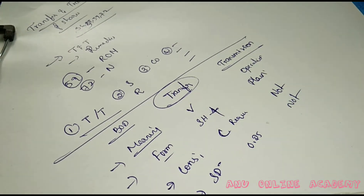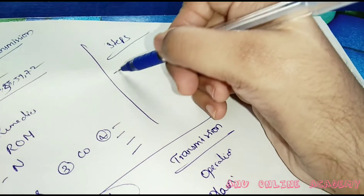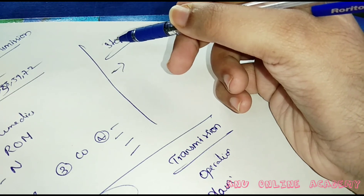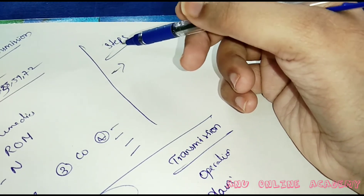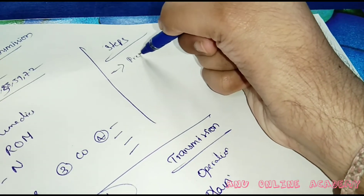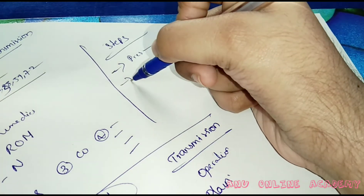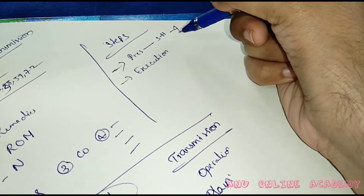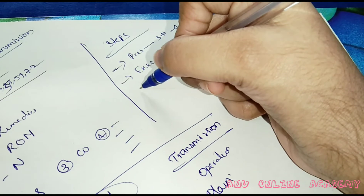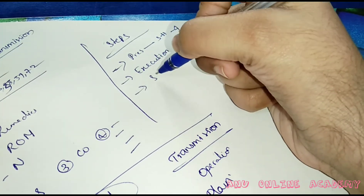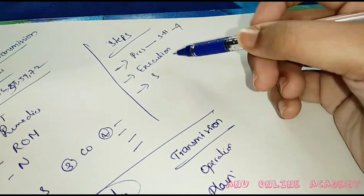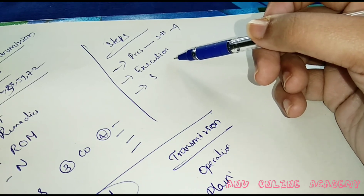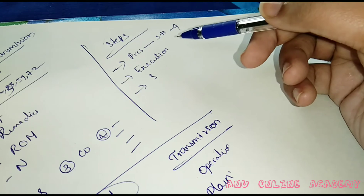Steps involved in transfer of shares: firstly, the parties will use the instrument of transfer in form SH-4. Next, execution of the transfer deed — the parties will fill the form and do necessary stamping. Then, submission of the completed or executed share transfer deed (STD) along with the share certificate to the company for registration of transfer.